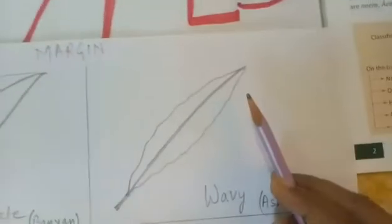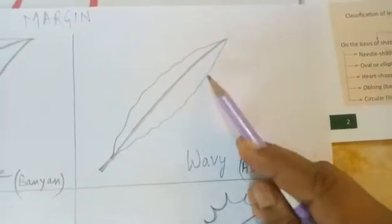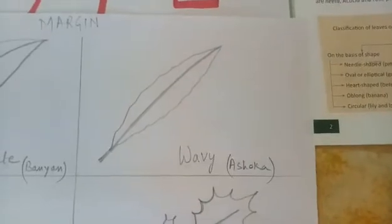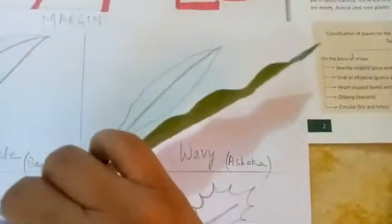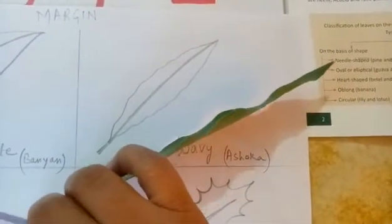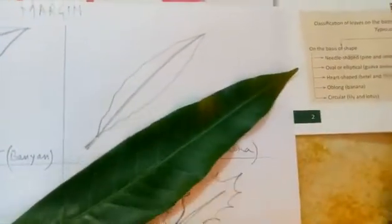Now, next one is wavy. To understand this type of leaf, you have to see the side of the leaf. Not the front part or the back part. You have to see the side. On the side, you can see the wave-like structure. Wave-like structure, you can see. I have brought this of mango. Mango is not completely wavy.